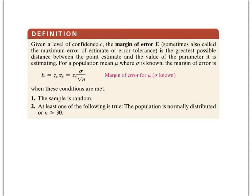Given the level of confidence, which is our variable C, the margin of error is the greatest possible distance from the point estimate and the value of its parameter that it's estimating. And this is where we know the population standard deviation — this is key for this whole process. The standard deviation is known for the population.